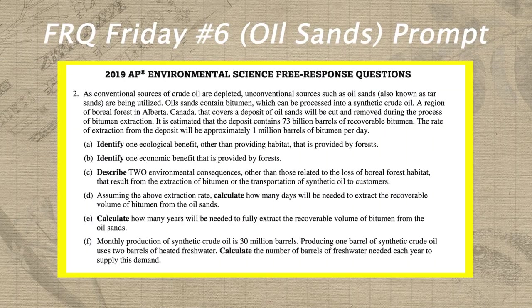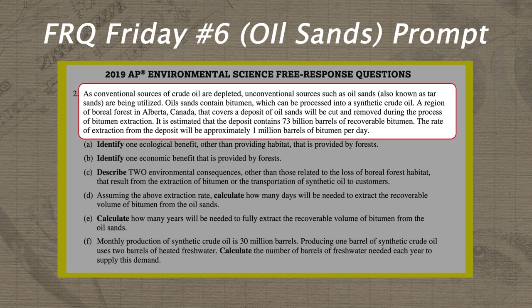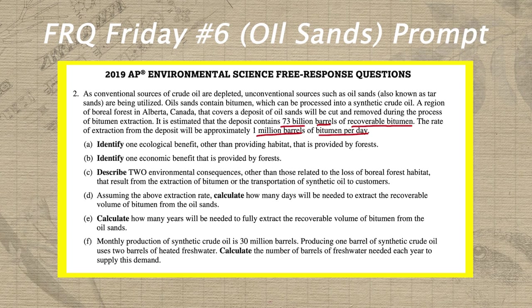With that, let's practice this new questioning method as we annotate our FRQ Friday prompt for unit six. The background information reads: as conventional sources of crude oil are depleted, unconventional sources such as oil sands, also known as tar sands, are being utilized. Oil sands contain bitumen, which can be processed into synthetic crude oil. A region of boreal forest in Alberta, Canada, that covers a deposit of oil sands will be cut and removed during bitumen extraction. It is estimated that the deposit contains 73 billion barrels of recoverable bitumen — I'll underline that since it's a key number for the calculation prompts — and the rate of extraction is approximately 1 million barrels of bitumen per day. In letter A, we're asked to identify an ecological benefit other than providing habitat that is provided by forests. We'll circle 'identify' and write a one above it.